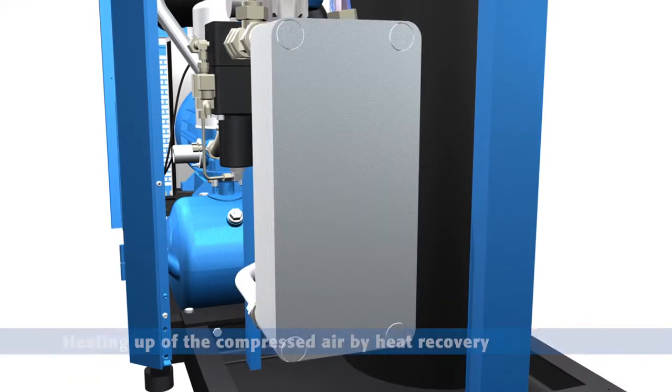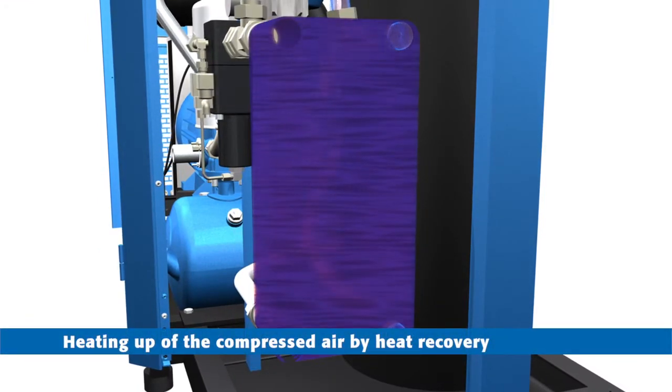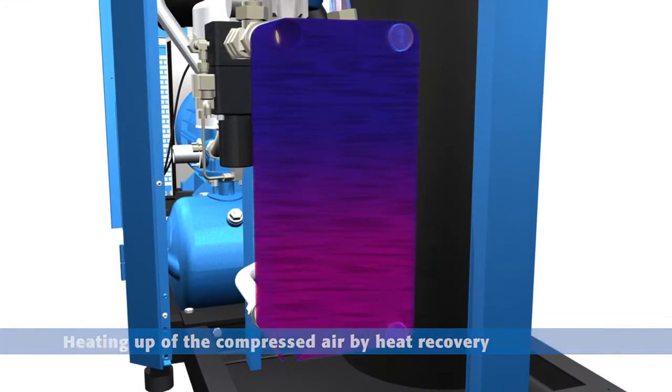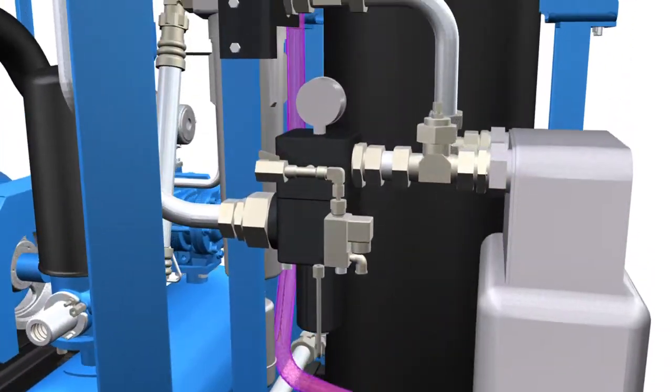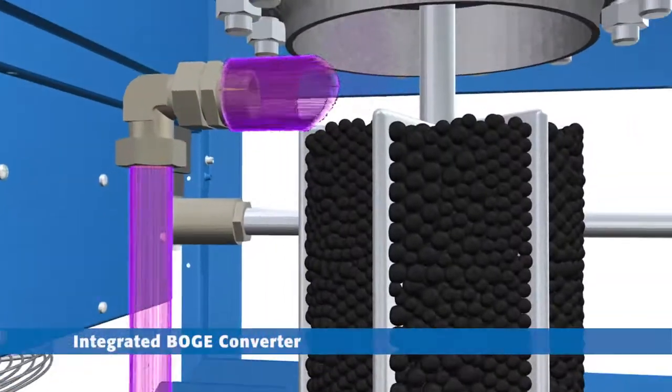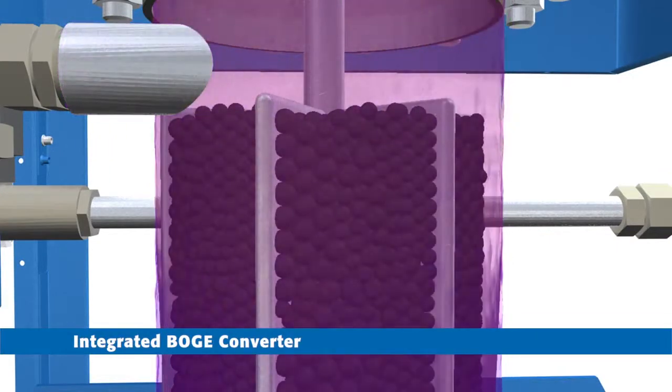The compressed air is first preheated to 230 degrees Celsius. It then flows into the centerpiece of all BlueCat compressors, the integrated converter.